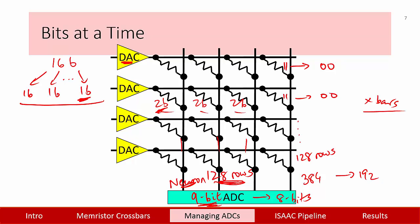In this first video, we've discussed the basic analog crossbar unit and how ADC overheads can be managed. In the next video, we'll describe the overall ISAC architecture and its results.